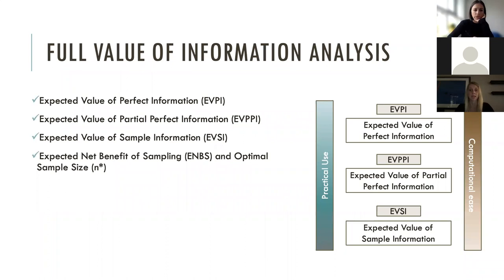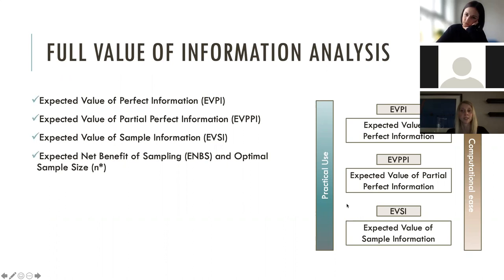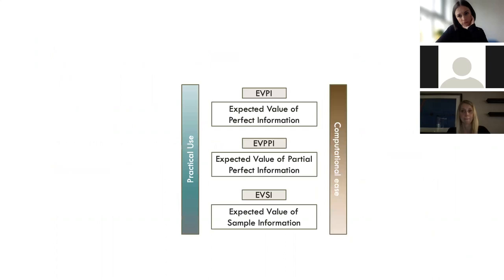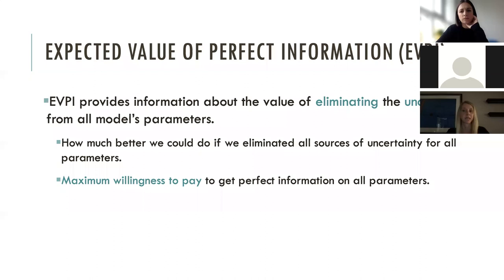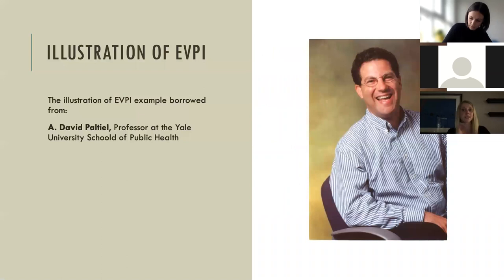There are several measures we can distinguish in VOI analysis, as shown on this diagram. As we move down the levels, the practical use of results increases but computational ease decreases. First, we start with the expected value of perfect information, EVPI, which provides information about the value of eliminating uncertainty from all model parameters. It helps evaluate how much better we could do if we eliminated all sources of uncertainty, representing our maximum willingness to pay for perfect information on all input parameters.